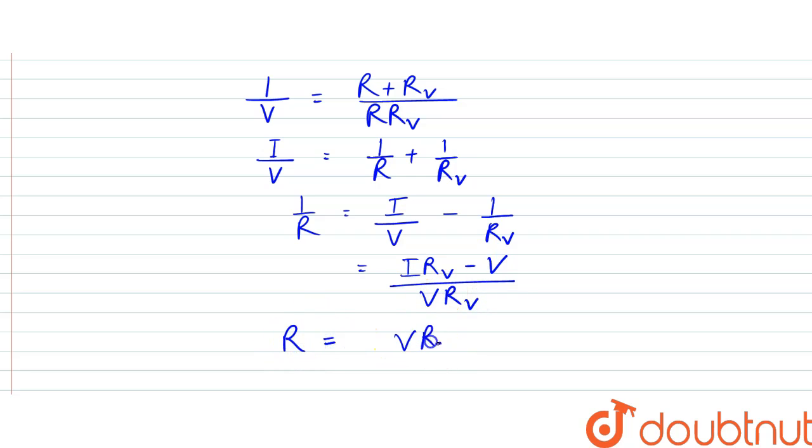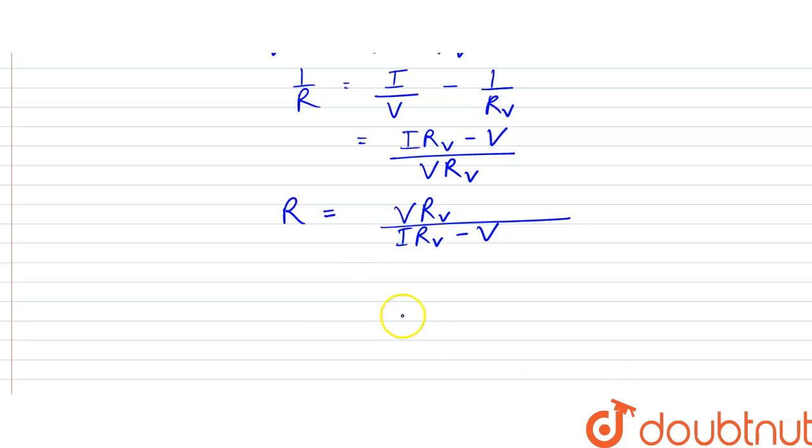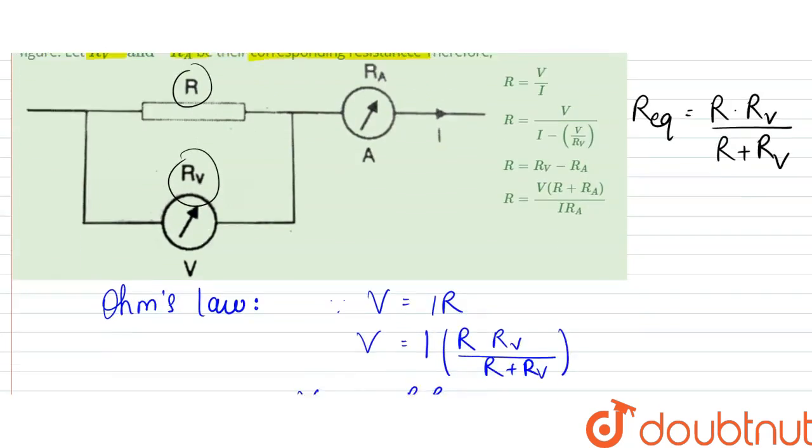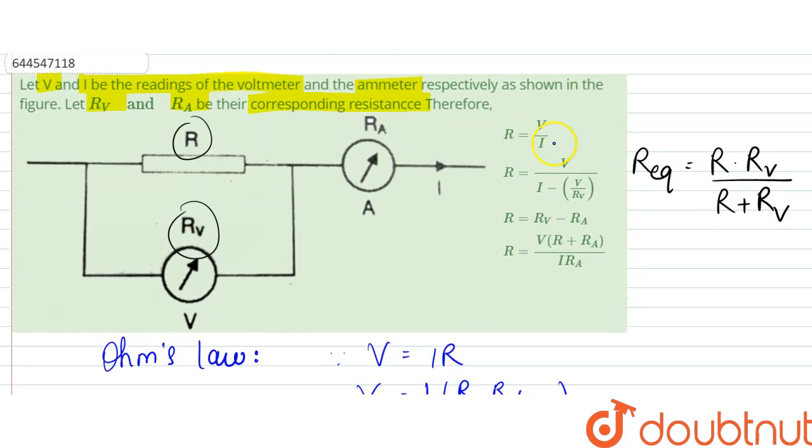Or we can simplify that to be equal to V divided by I, so R would be equal to V by I minus V by R_V.